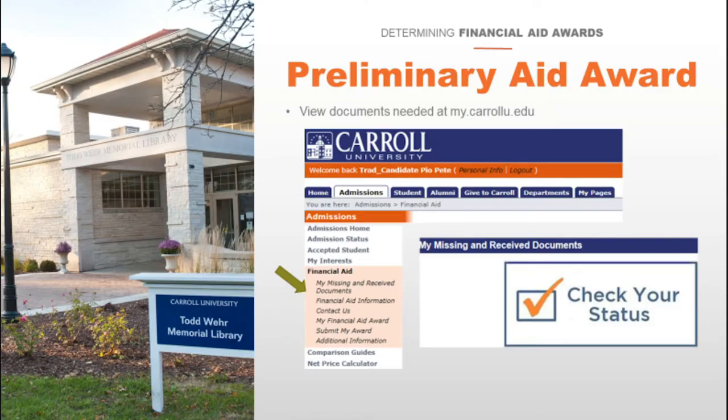If you have a preliminary award, make sure to review what items are needed to complete your file. You can do this by going to My Missing and Received Documents. You can even upload your missing documents right from the portal.